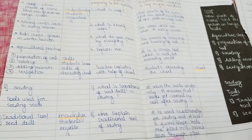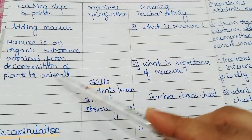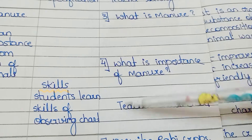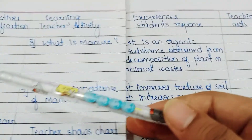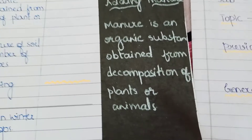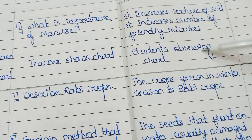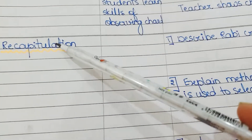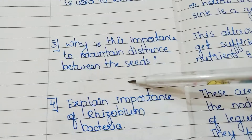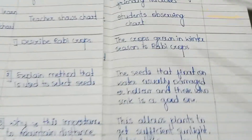Here is the rest of Presentation 2 — what is manual weeding and the importance of manure. The expected answers from students are shown. The teacher shows a chart and students observe it. For recapitulation, questions include: 'Describe Rabi crops', 'Explain the method used to select seeds', 'Why is it important to maintain distance between seeds?', and 'Explain the importance of Rhizobium bacteria.' Expected answers are provided.